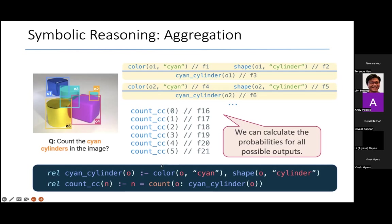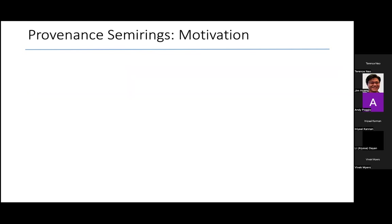As we continue this calculation, we have all six possibilities from zero cyan cylinders to five. We can make a call to a weighted model counting solver for each of these six cases, and it involves an expensive probability calculation.